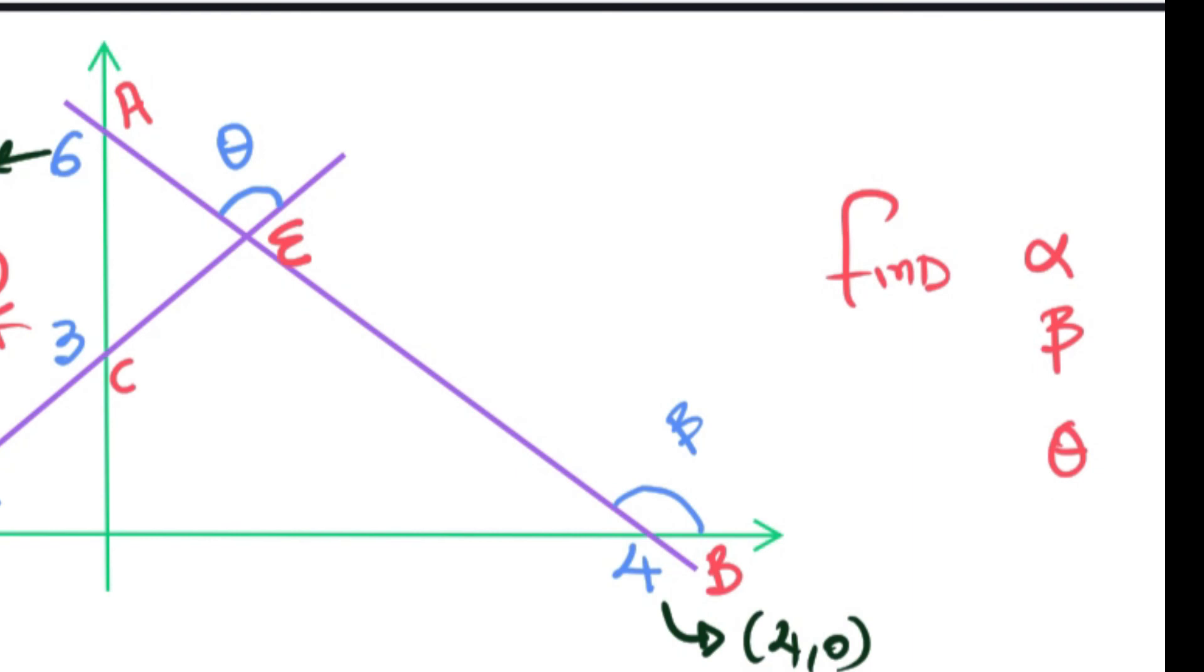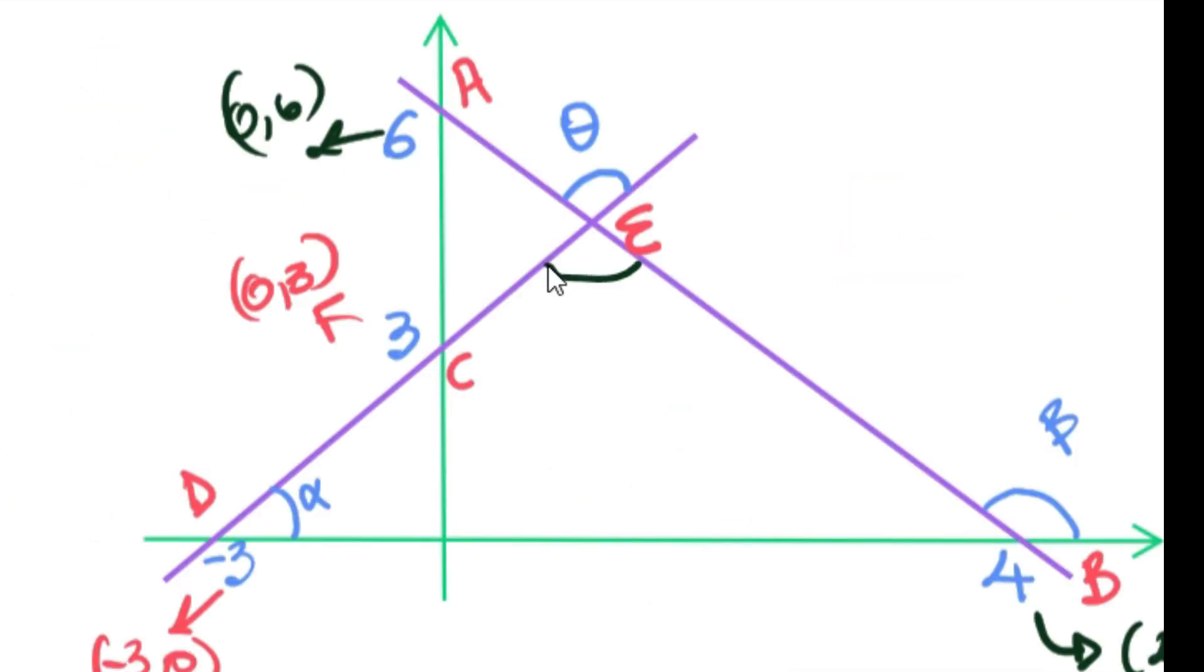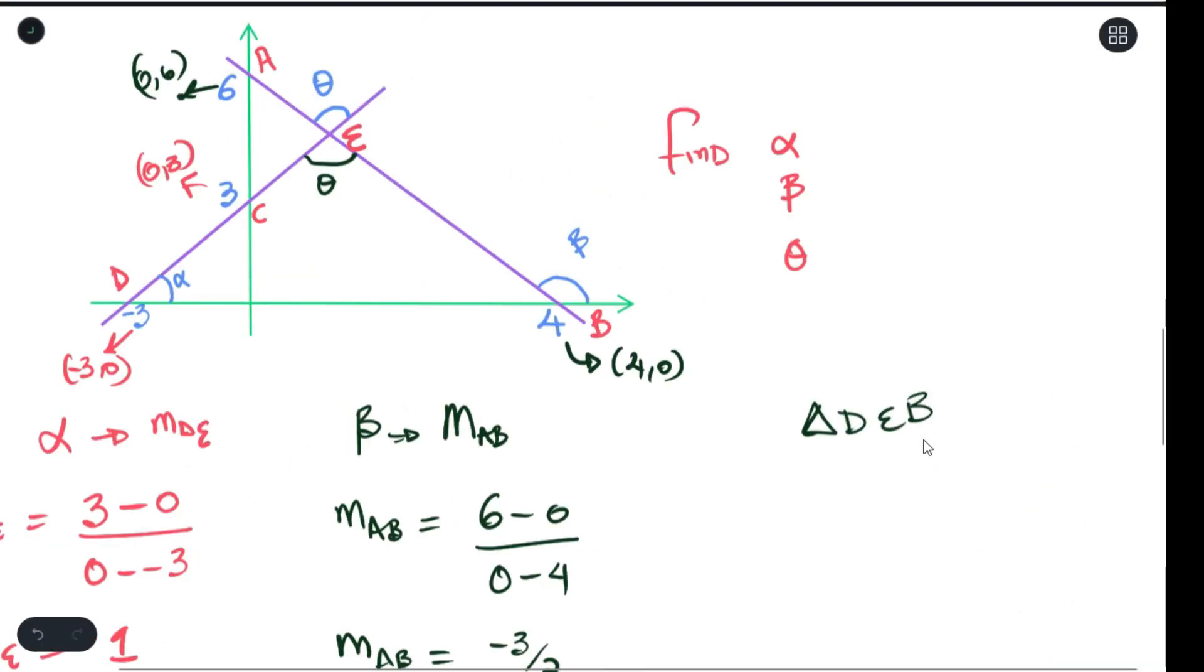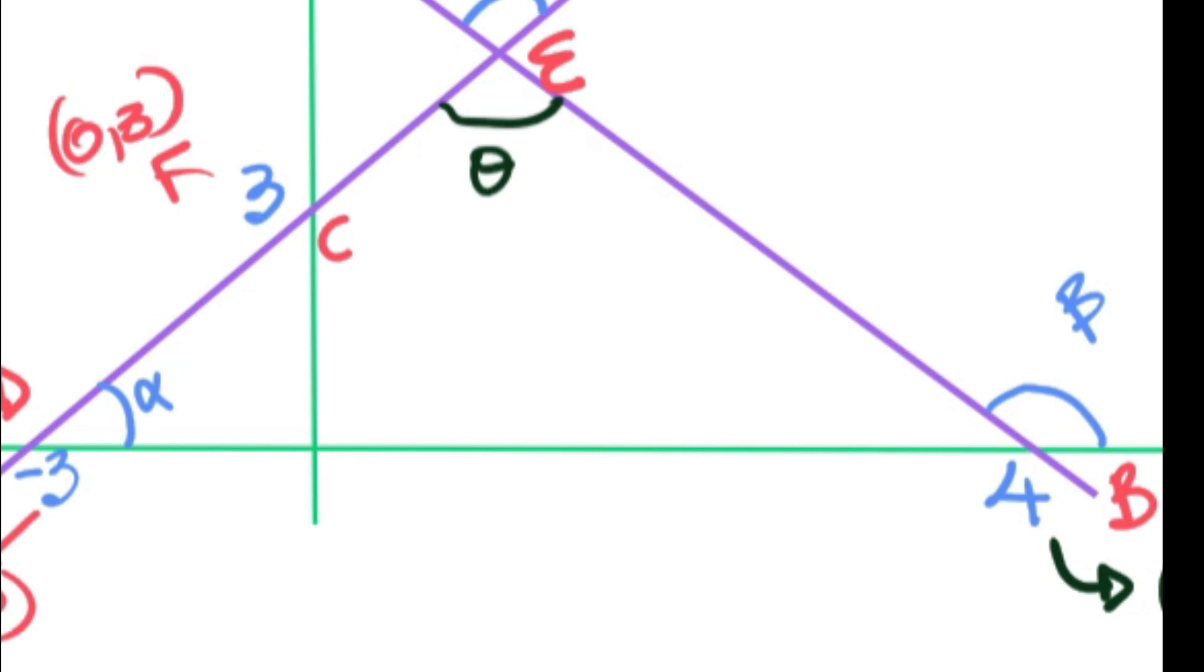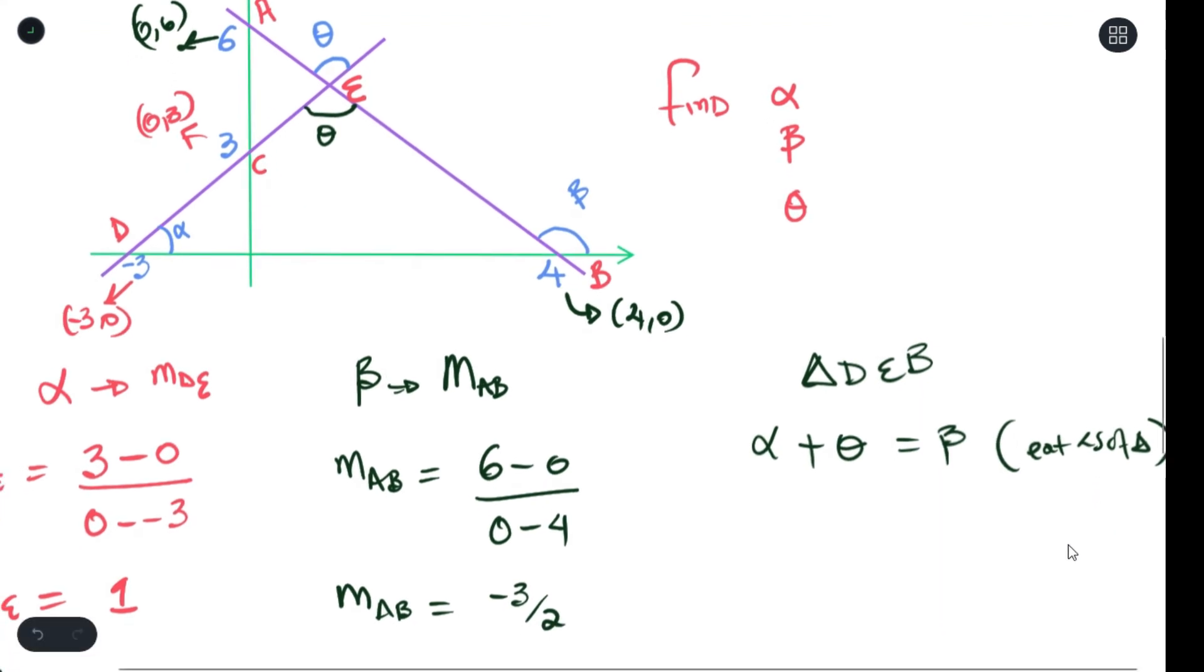So the last question asks you to find the value for theta. Now we understand that this is our theta over here and this angle here would also be theta. The reason for that is because of vertically opposite angles. Now as you can see DEB forms a triangle. We also know that alpha plus theta is equals to beta and the reason for that is exterior angles of a triangle.